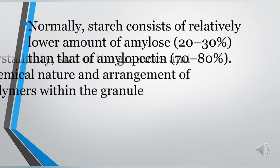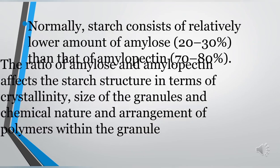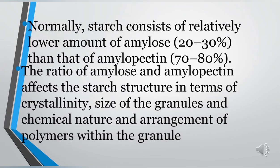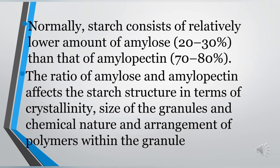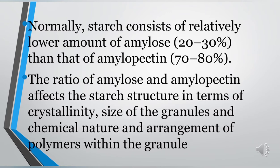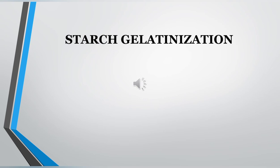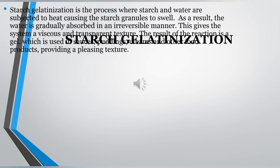Normally, starch consists of a relatively lower amount of amylose — 20 to 30 percent — than that of amylopectin, which is 70 to 80 percent. The ratio of amylose and amylopectin affects the starch structure in terms of crystallinity, size of the granules, and the chemical nature and arrangement of polymers within the granule.